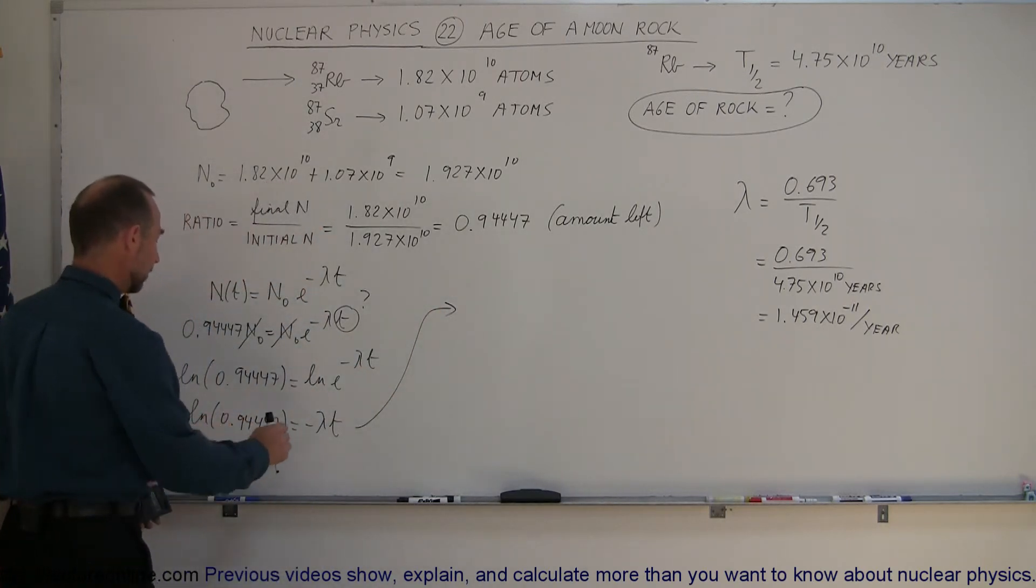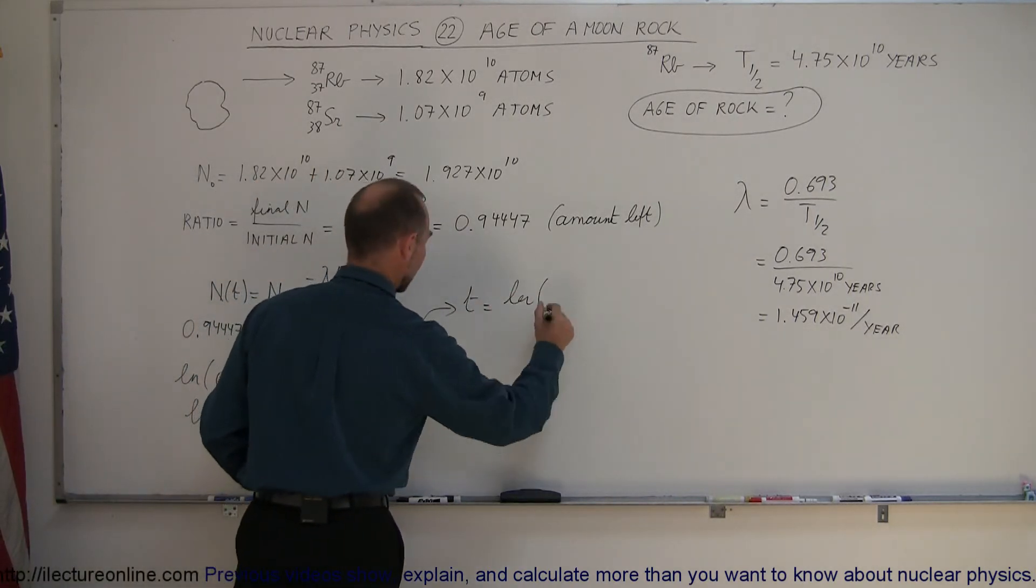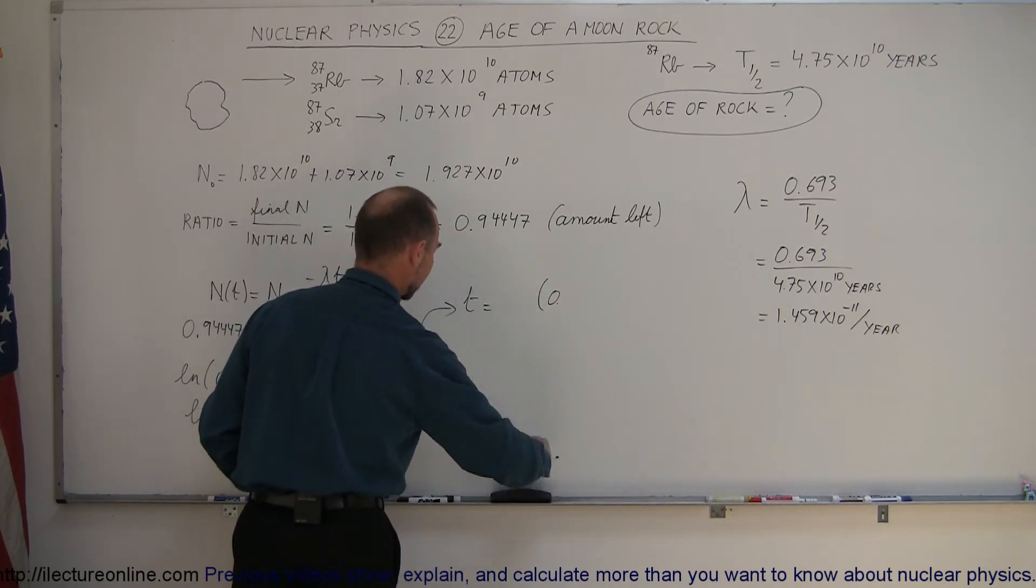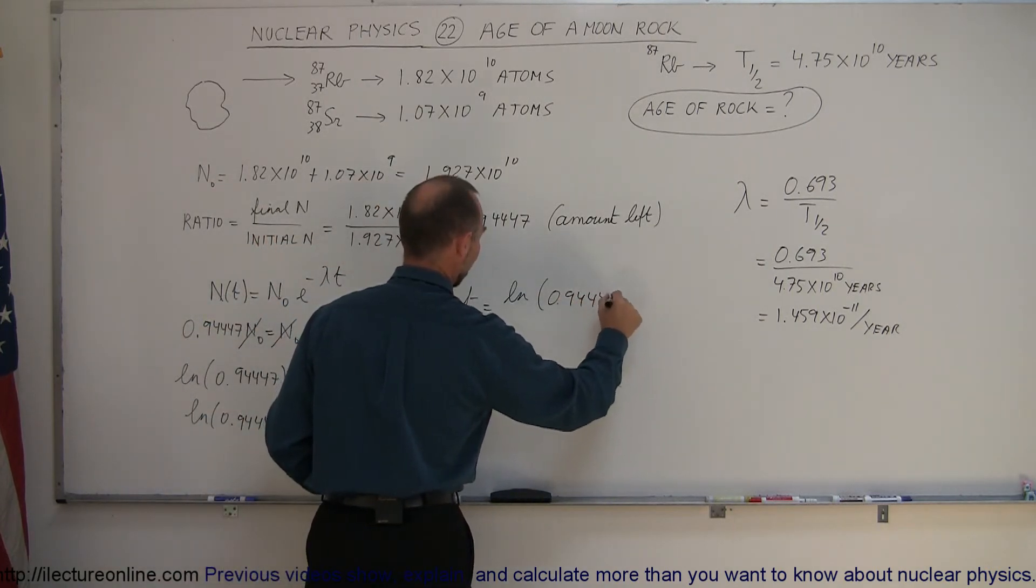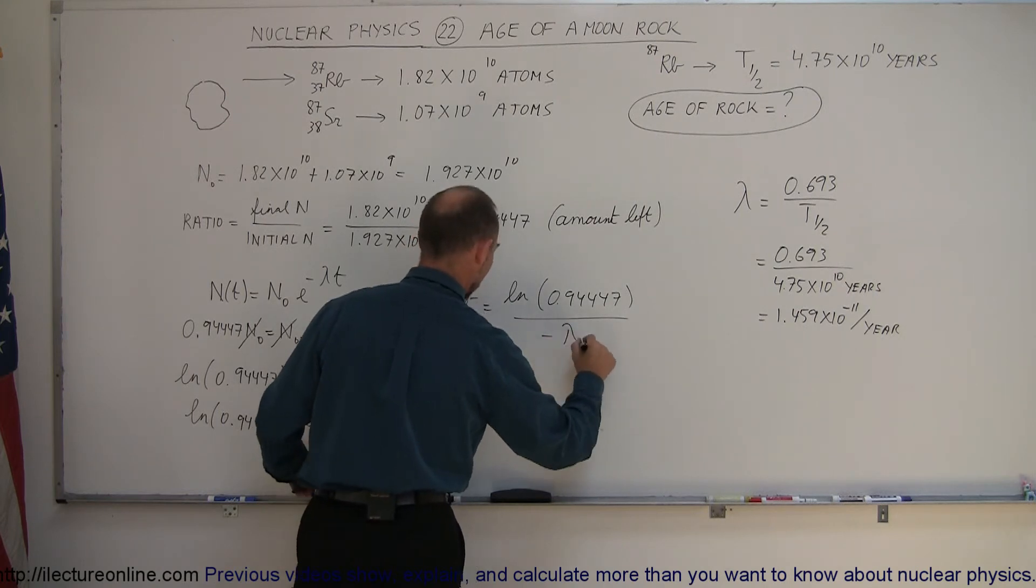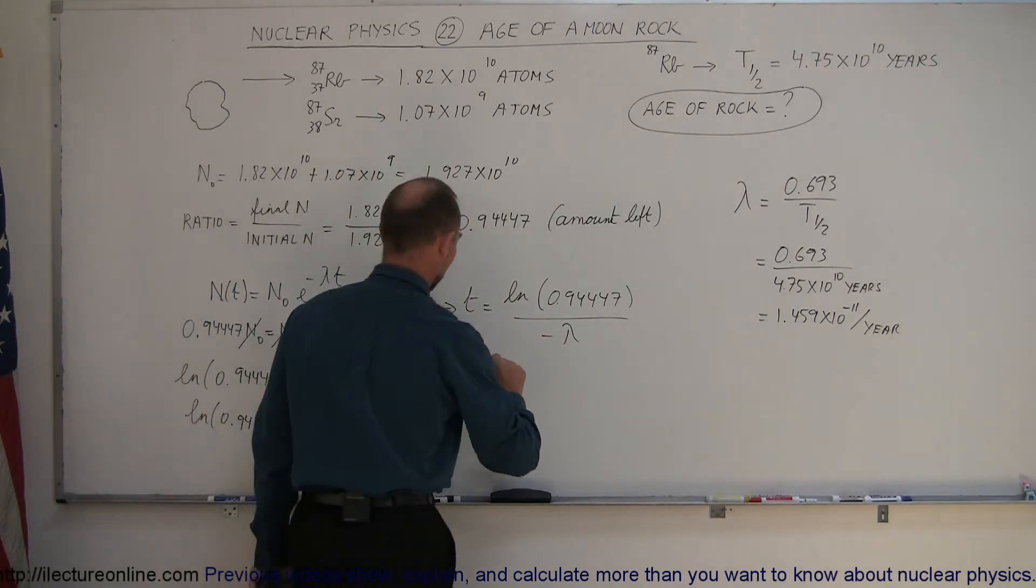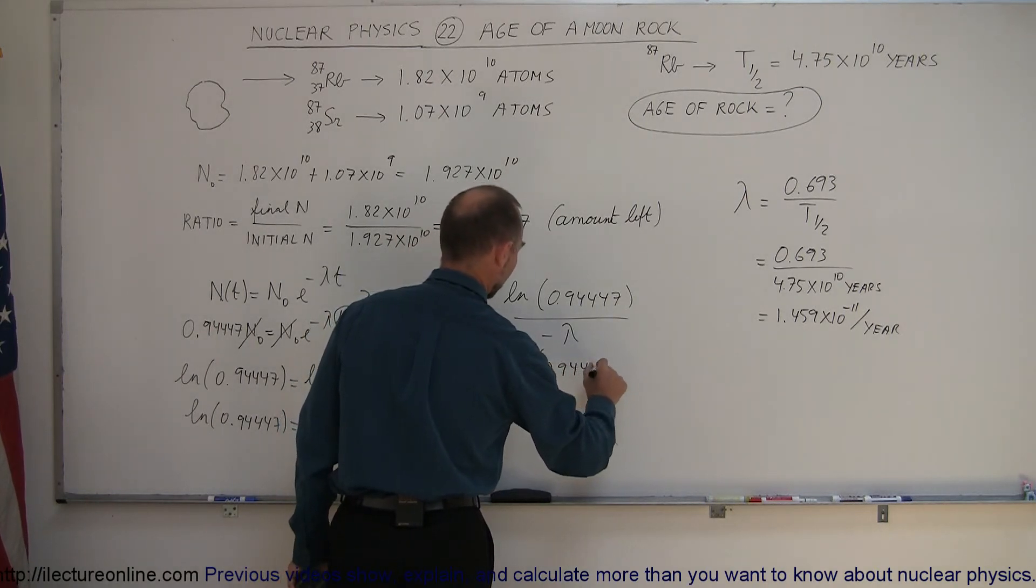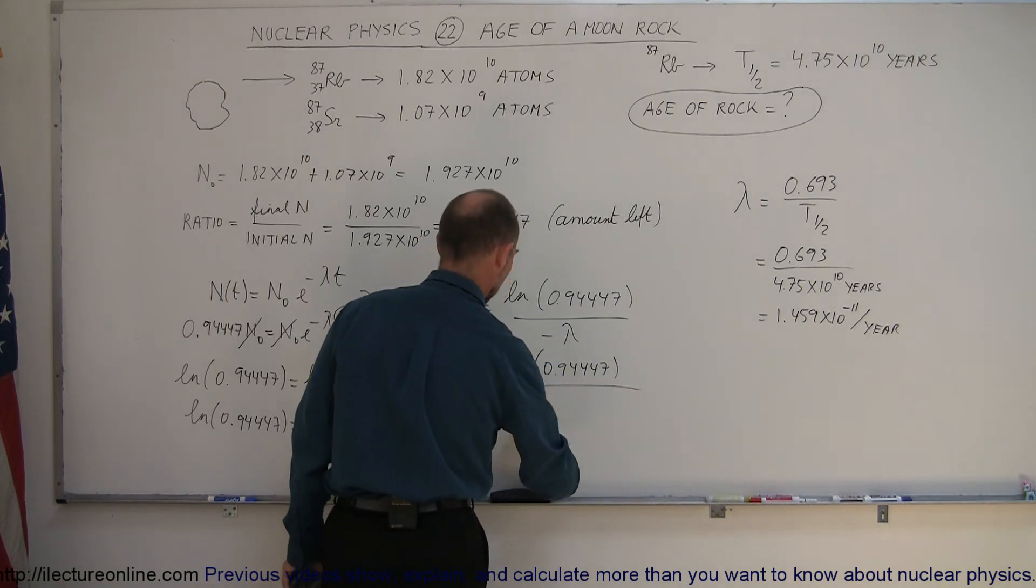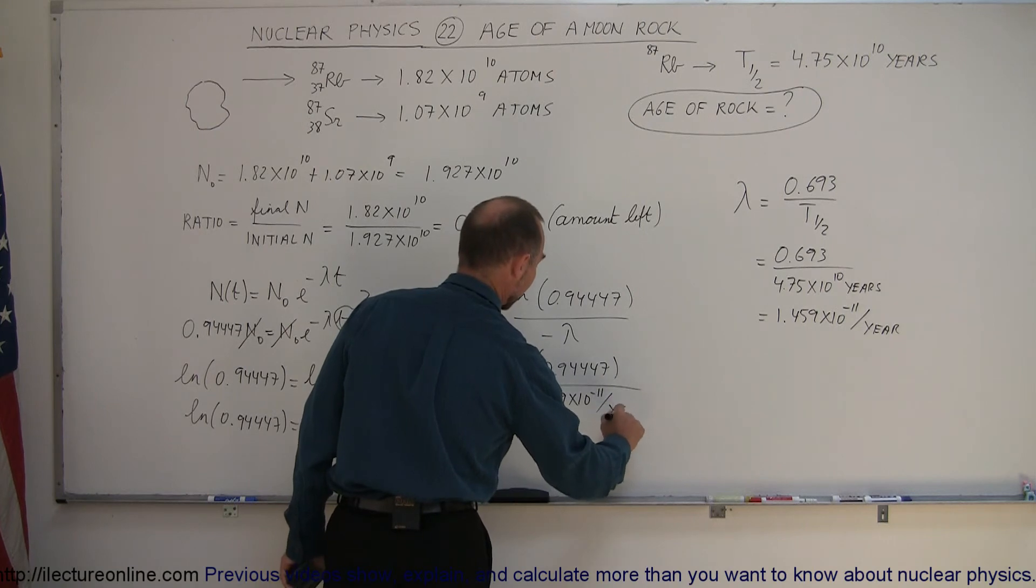And if we solve this for T, we get T is equal to this divided by negative lambda. So T is equal to the natural log of 0.94447 divided by minus lambda, right? If I take the minus lambda, put it up here, and then turn the equation around, I get that. Now let me plug in what lambda is equal to. So that's equal to the natural log of 0.94447 divided by minus, don't forget the minus, minus 1.459 times 10 to the minus 11 per year. And that'll give us time in years.